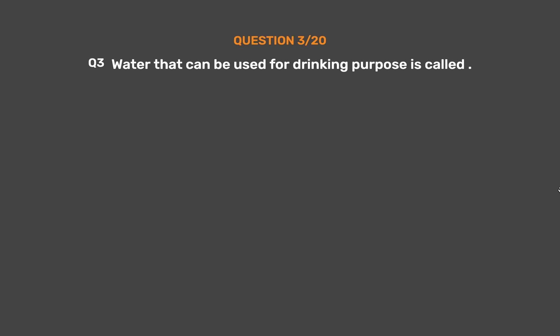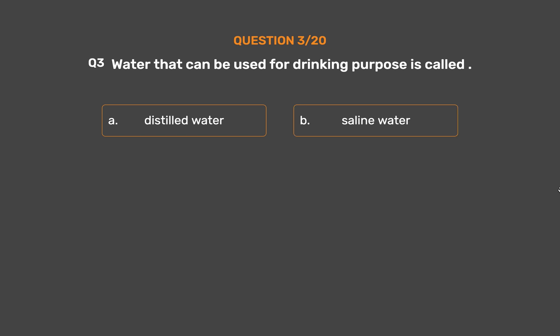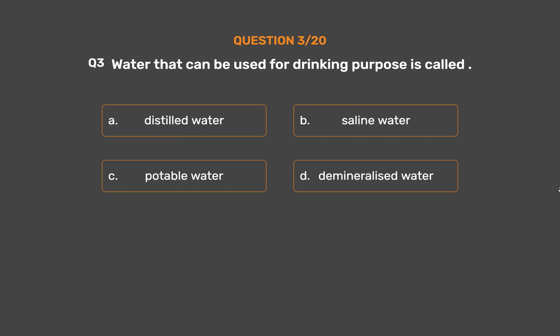Question number 3. Water that can be used for drinking purposes is called _____. Option A: Distilled water. Option B: Saline water. Option C: Potable water. Option D: Demineralized water.